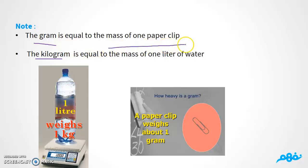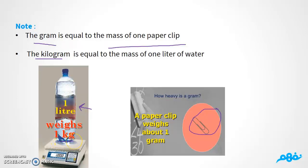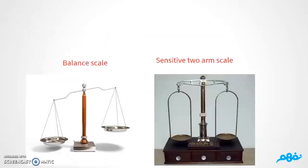If you want to explain the gram to someone who doesn't know it, you can say that one gram is pretty much equal to the mass of one paper clip. And if they don't know the kilogram, you can tell them that one liter of water equals one kilogram.